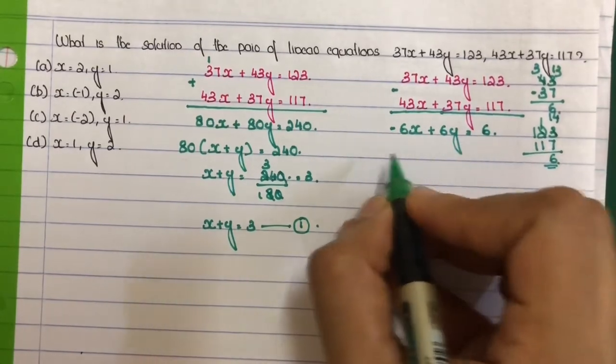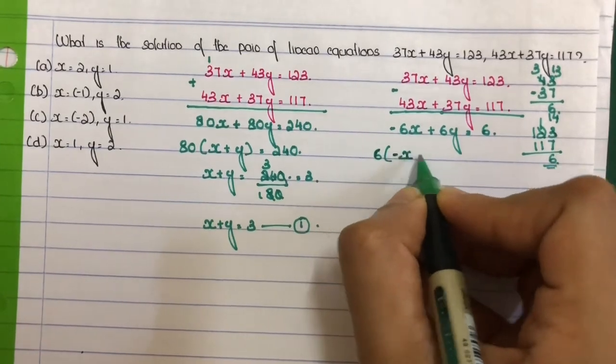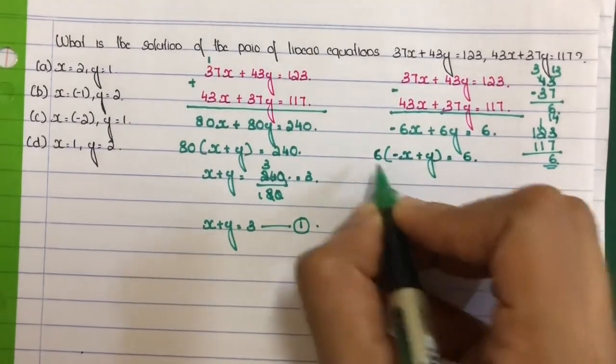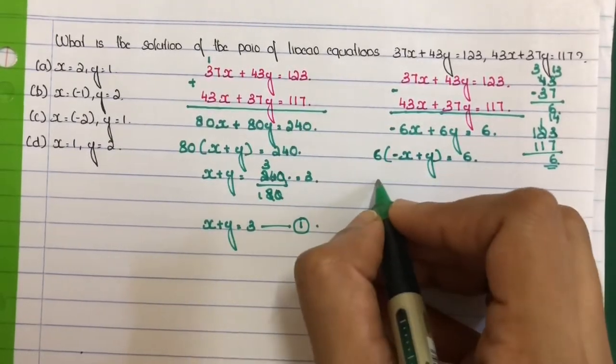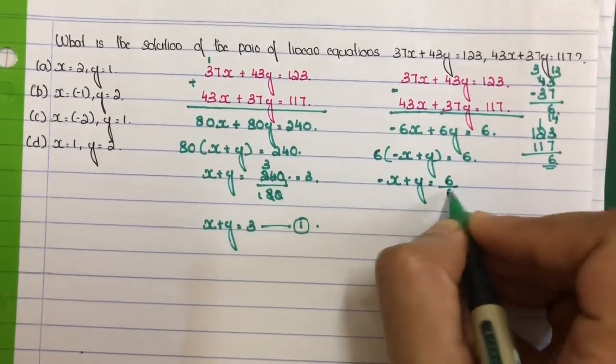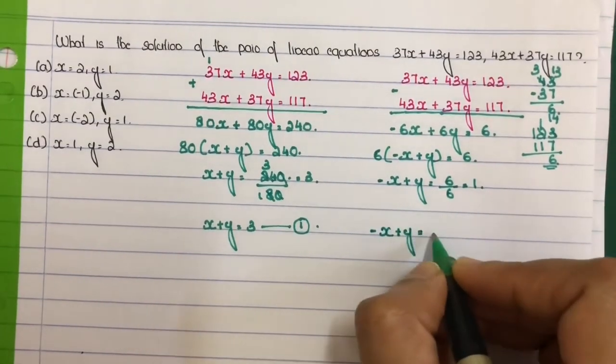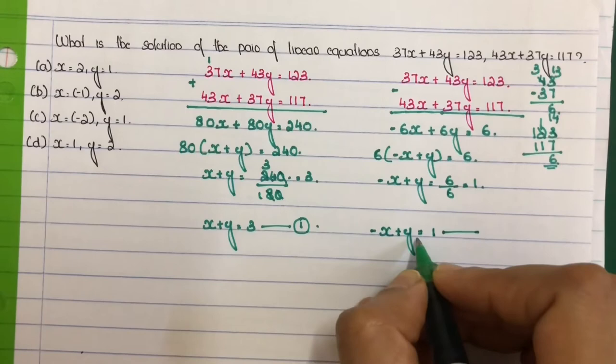Next, solve using the factoring formula. Take 6 as common factor and factor it out. Divide by 6: minus x plus y is equal to 6 by 6 equal to 1. So minus x plus y is equal to 1.